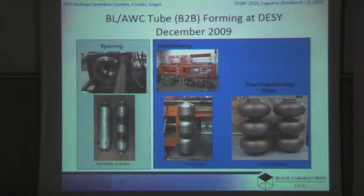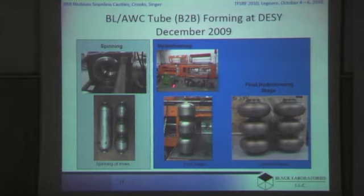So in order for us to put this into production, one thing that needs to be done in both the spinning and hydroforming is that machines have to be built that can handle this. This is the hydroforming equipment — the first stage of hydroforming, then the dies are changed, and this is the final stage.